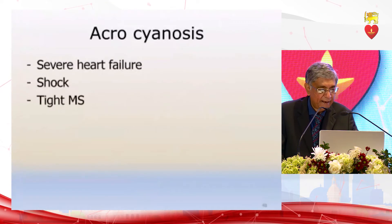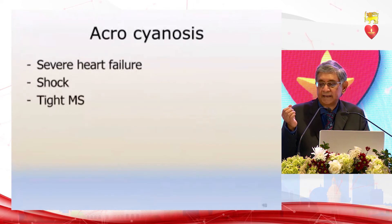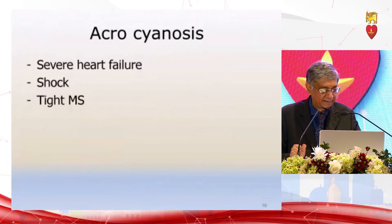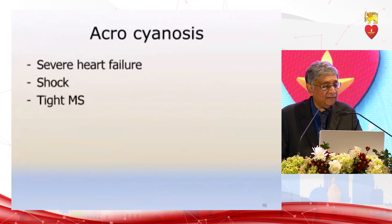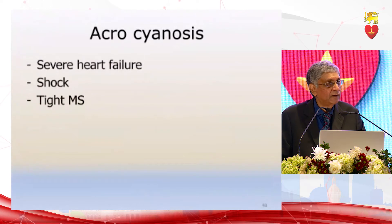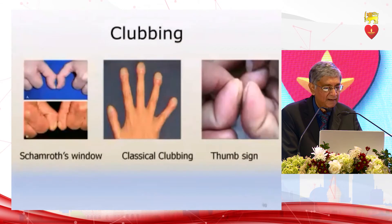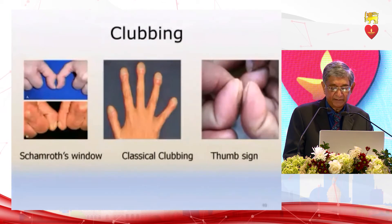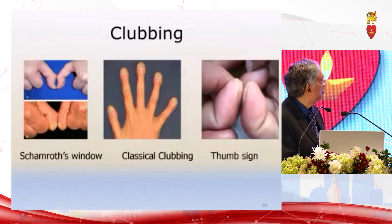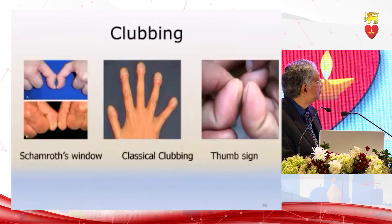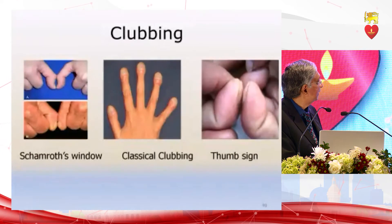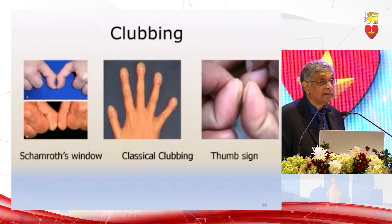Coming to the hands: acrocyanosis — cyanosis at the tips of the fingers — occurs in severe heart failure, in shock, and in very severe tight mitral stenosis. Then we have clubbing. The Schamroth's window test: when two fingers are kept together, a triangular shadow occurs normally. In clubbing, this shadow disappears. The classical clubbing has five physical signs, and the thumb sign is described because clubbing first appears in the thumb.